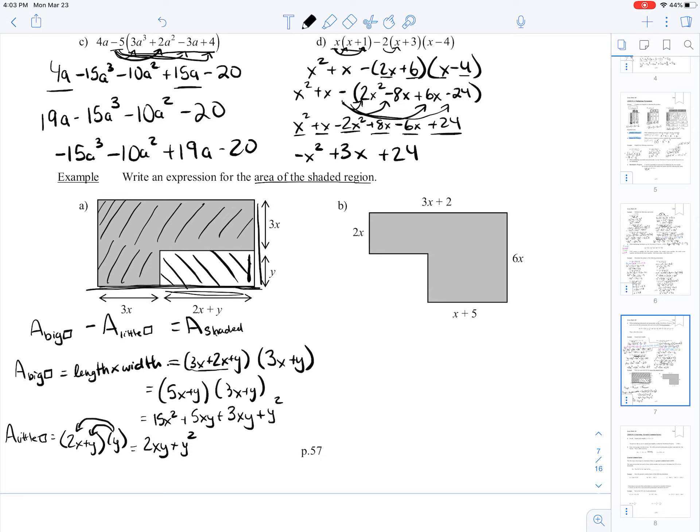And remember, the shaded was my big area minus my little area. So that's 15x squared plus - we can combine 5xy plus 3xy to be 8xy plus y squared. And I'm going to subtract my little area, so that's just 2xy plus y squared. Oh, almost got me there. I want to subtract this whole thing, right? So in actuality, that's negative 2xy minus y squared. Now, are there any x squared terms that I can combine? No. So it's 15x squared.